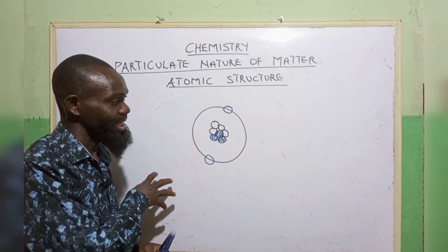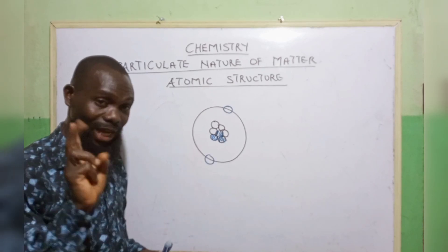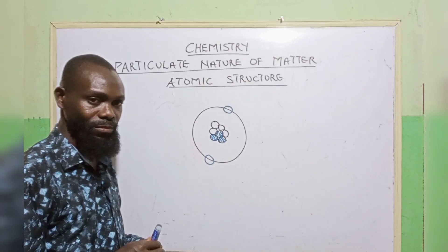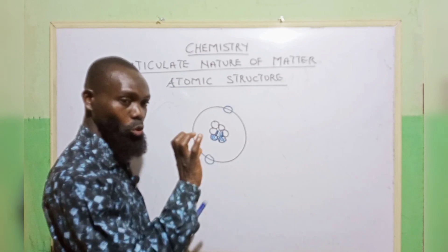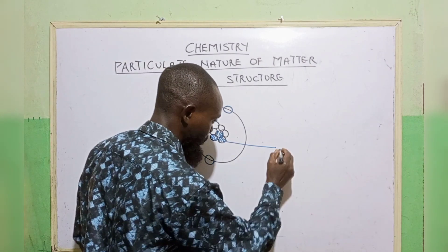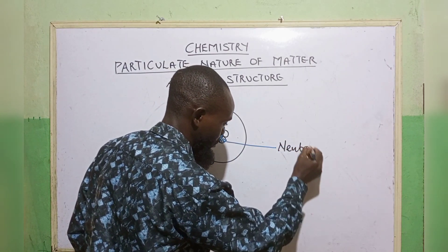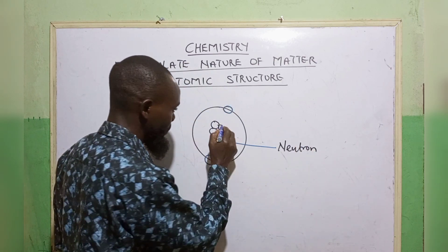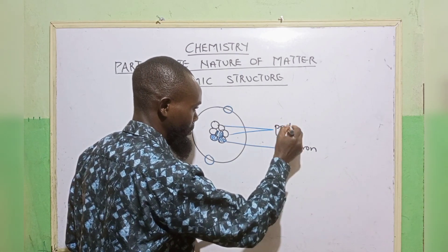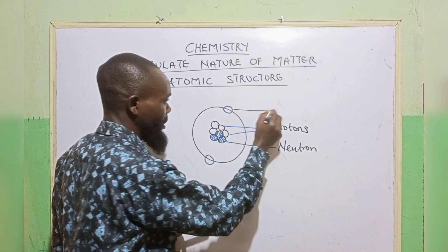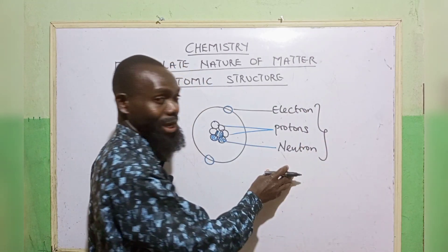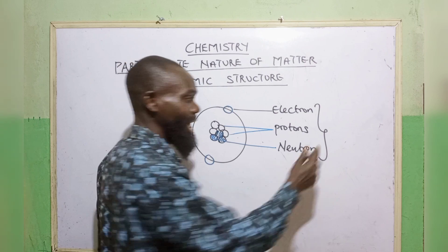This atom, as we are now looking at, is made up of two parts. The first part is the nuclear part, and the second part is the shell. Inside the nucleus, we have two particles. Let us call this one the neutron, and the other ones let us call them protons. Then this one here we call electrons. The nucleus is otherwise known as the nuclear charge.